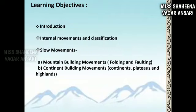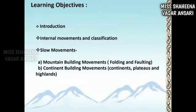The two categories are slow movements and sudden movements. Slow movements are changes in the earth's crust that are so slow it takes hundreds of years to become noticeable. Slow movements are classified into two sub-categories: first, mountain building — creating folding and faulting; and second, continent building — leading to the creation of continents, plateaus, and highlands.